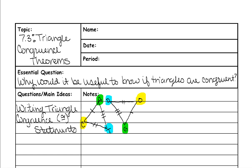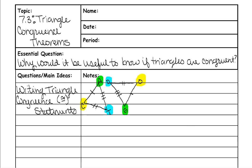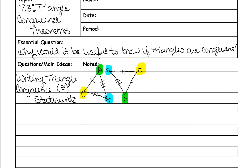Whenever you go to name the triangles, the colors — meaning the corresponding angles — have to be in the same order. For the first triangle, you can name it whatever order you want. I like them to spell things, so I'm going to name it CAT — triangle C-A-T.